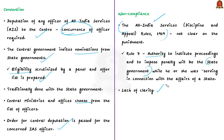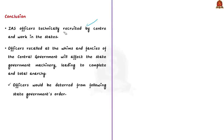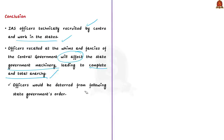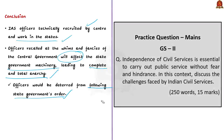IAS officers are technically recruited by the centre and lent to the states. But if officers are recalled at the whims and fancies of the central government, the entire state government machinery will crumble, leading to complete anarchy. It will also deter officers from following state government orders, as they may fear being recalled by the central government at any moment. Therefore, such moves set wrong precedents and should be avoided at all costs.